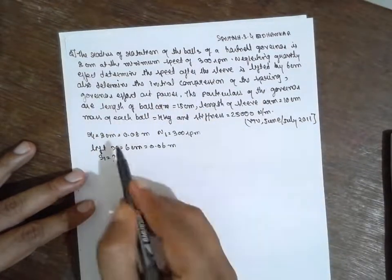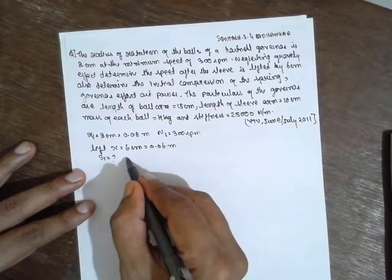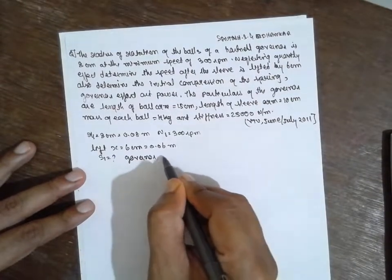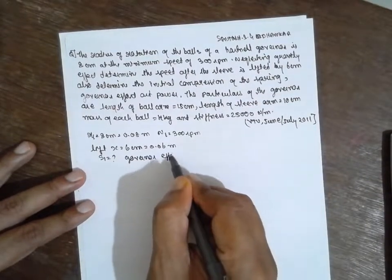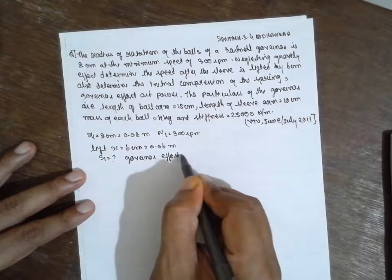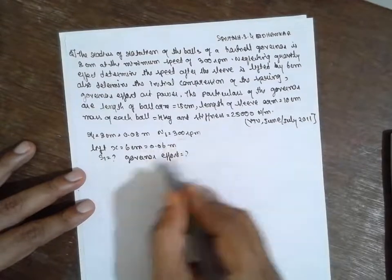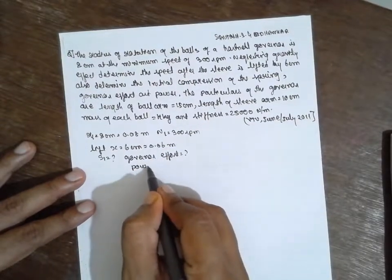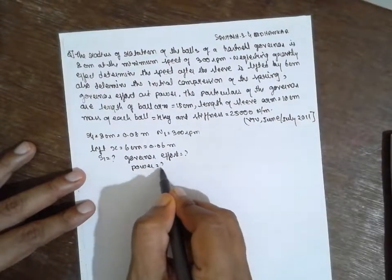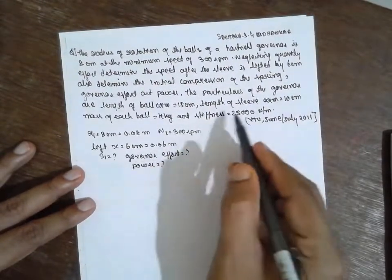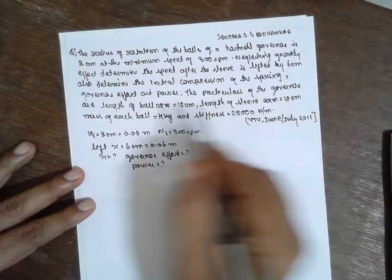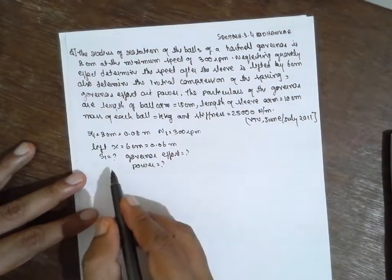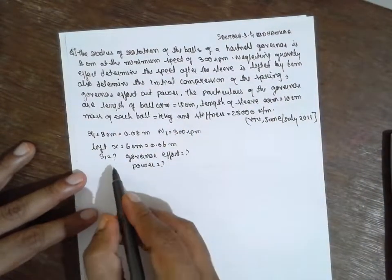We need to determine the governor effort, governor power, and also the arm lengths of the particular governor: A is 15 cm and B is 10 cm.